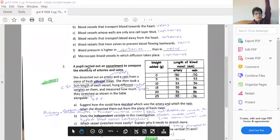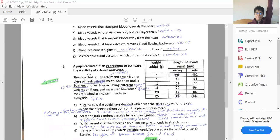All right. So question number two, the pupil carried out an experiment to compare the elasticity of arteries and veins because they've got that muscle in them that allows them to stretch and recoil. Okay. So she dissected out an artery and a vein from a fresh piece of meat. She then took a five centimeter length of each vessel, hung different weights on them and measured how much they stretched.